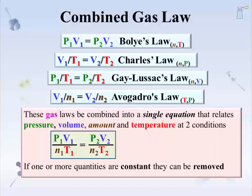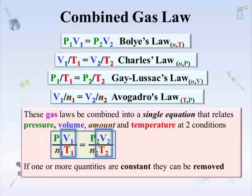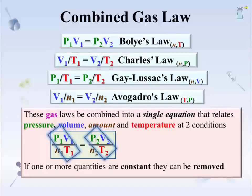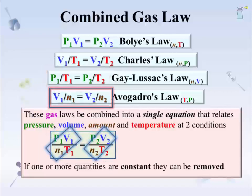What happens to the combined gas law if two properties are held constant? If amount and temperature are constant and only volume and pressure can vary, that's Boyle's law. Remove n and T from the combined gas law and you get Boyle's law. What if pressure and amount are held constant, and only volume and temperature can vary? That's Charles' law. Keeping volume and amount constant and letting pressure and temperature change produces Gay-Lussac's law. Holding pressure and temperature fixed and just letting amount and volume vary produces Avogadro's law. Gas law at two conditions is really just a manifestation of holding some properties constant and letting others adjust to circumstance.